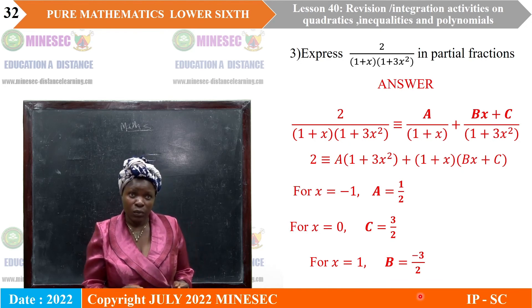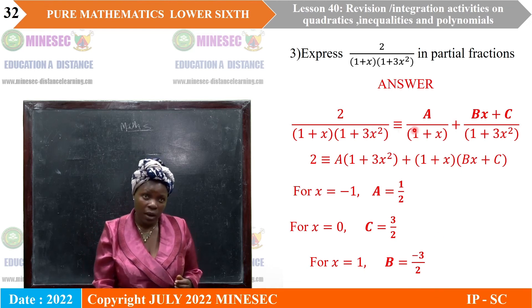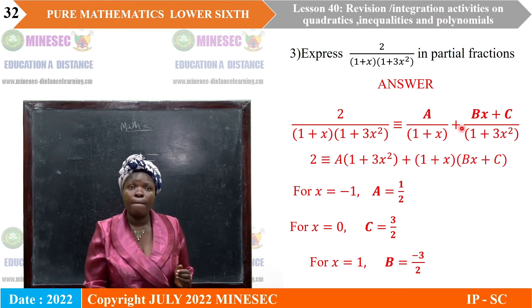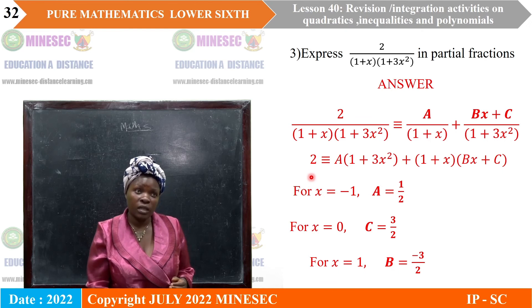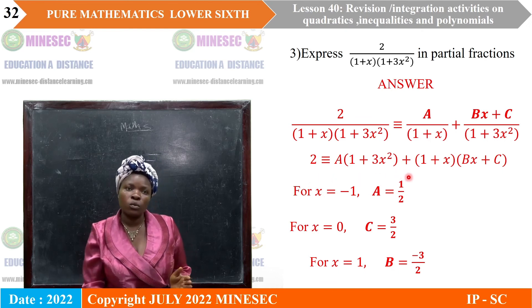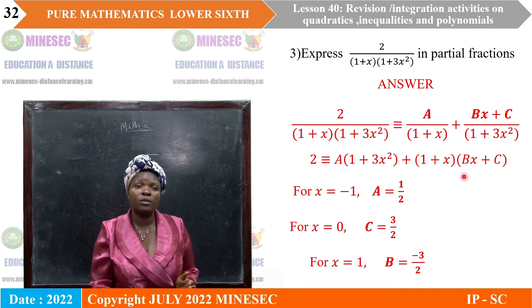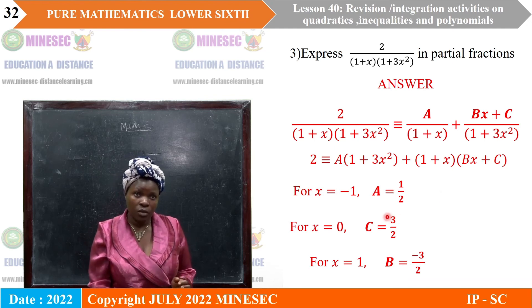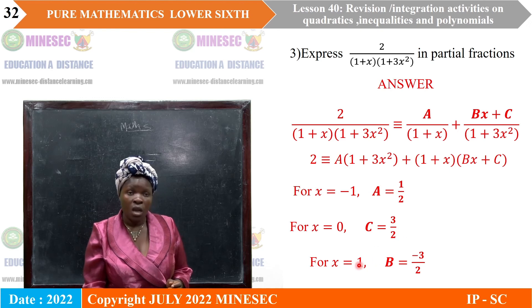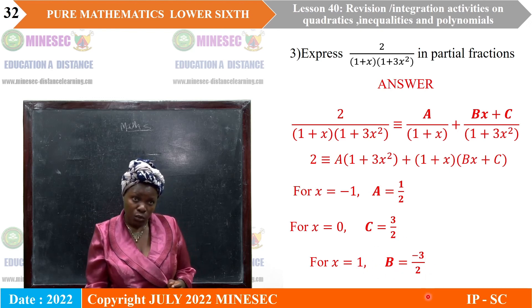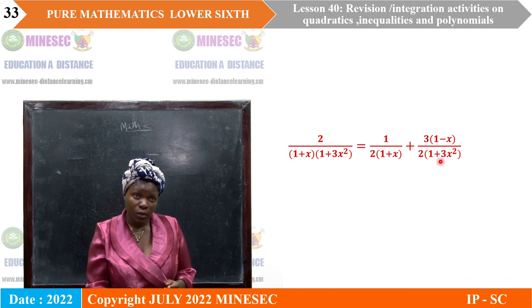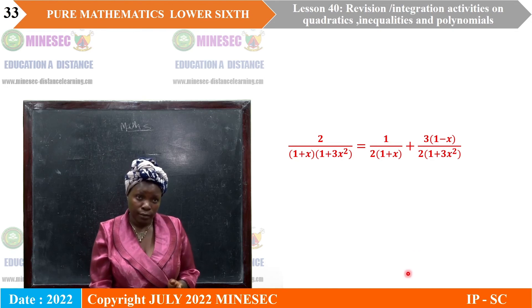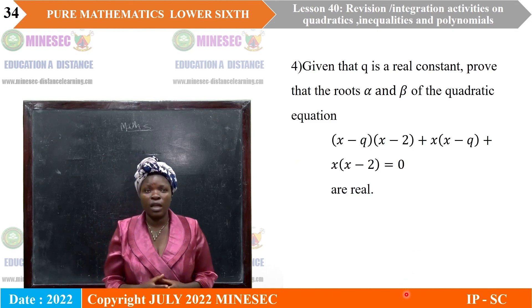Question 3: express 2 over 1 plus x times 1 plus 3x squared in partial fractions. This is identically equal to a over 1 plus x plus bx plus c over 1 plus 3x squared. Eliminating fractions by multiplying by the LCM gives 2 identically equal to a times 1 plus 3x squared plus 1 plus x times bx plus c. Solving gives a equals one half, c equals 3 over 2, and b equals negative 3 over 2. So the partial fraction is 1 over 2 times 1 plus x, plus 3 times 1 minus x divided by 2 times 1 plus 3x squared.